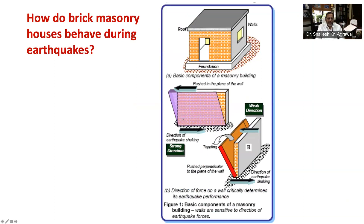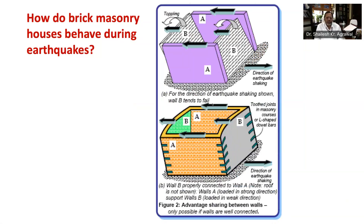As shown in Figure 1B, the wall topples easily if pushed horizontally at the top in the direction perpendicular to the plane of the wall, which is called the weak direction. However, the wall offers much greater resistance if pushed along its length, that is, in its own plane, also known as the strong direction. Ground motion due to earthquake is divided into two horizontal directions and one vertical direction. The horizontal vibrations are most damaging as horizontal inertia forces develop at the roof and transfer to the wall, acting either in the weak or strong direction.